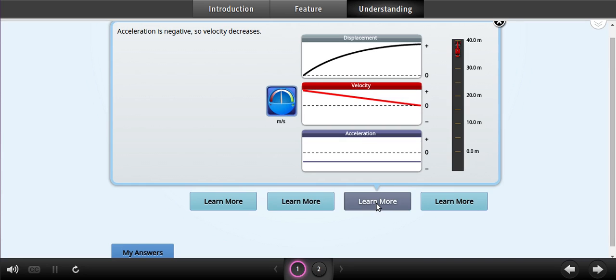When the car slows down, acceleration is negative, and velocity decreases. Displacement remains positive, but it doesn't increase as quickly as when acceleration is positive and velocity increases.